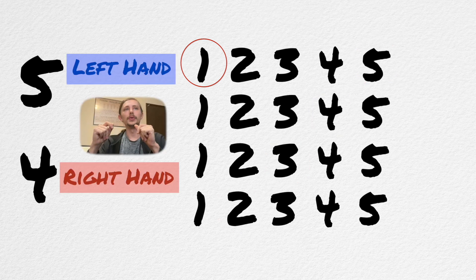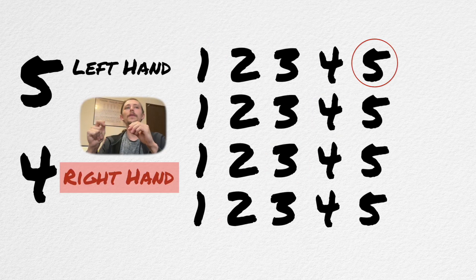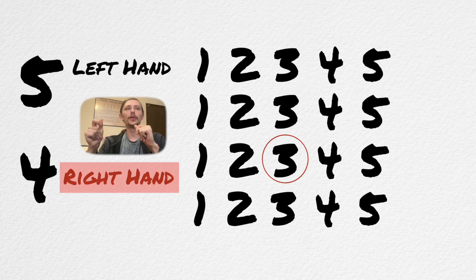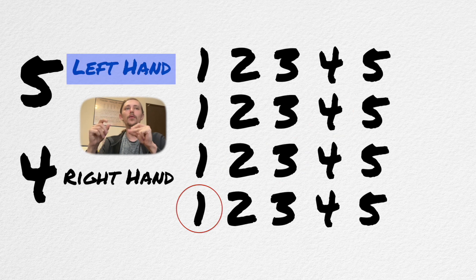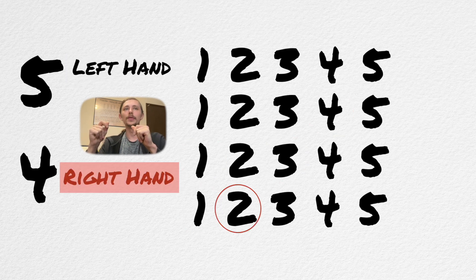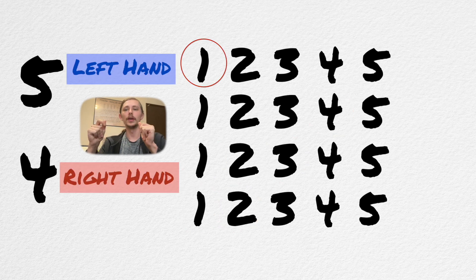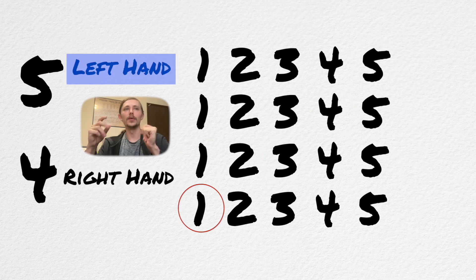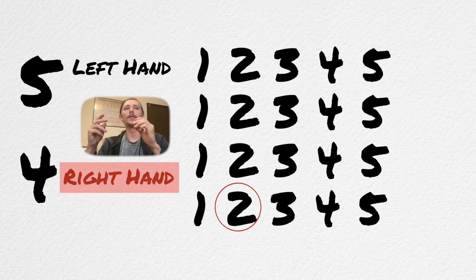1, 2, 3, 4, 5. 1, 2, 3, 4, 5. 1, 2, 3, 4, 5. 1, 2, 3, 4, 5. [Counting through the five-against-four grid pattern, practicing the polyrhythm.]